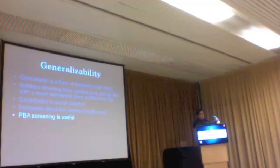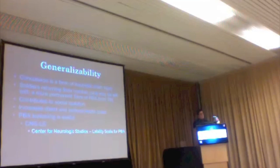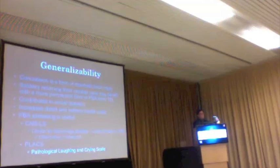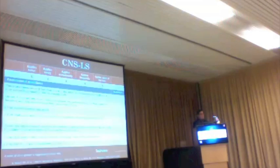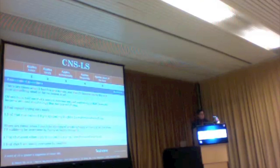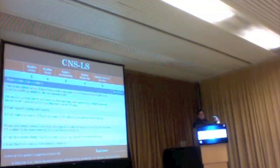Pseudobulbar affect screening is useful, but depends on what screening you use. There is the CNS Lability Scale — a patient-scored tool with seven questions where a score of 13 or higher is suggestive of PBA. There is also PLACS, the Pathological Laughing and Crying Scale, which is interviewer-rated. Some questions concern crying easily, and depression must also be considered as the main differential diagnosis. The simple way I ask patients is: do you ever think people think you look angry, sad, or happy, but you don't feel that way inside — your affect is different from your mood?